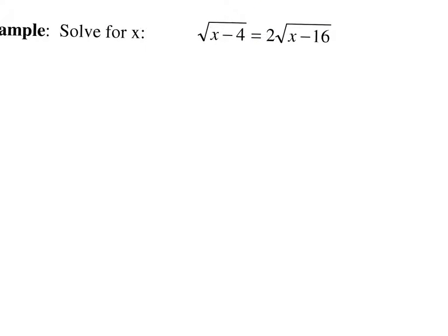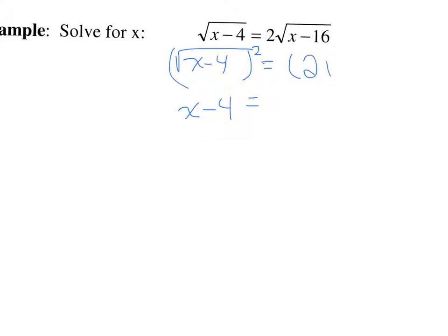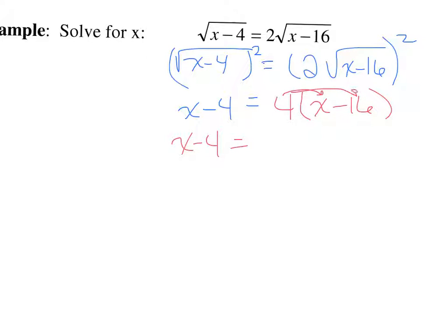This equation has two radicals. The radical on the left — the square root of x minus 4 — is already isolated, but the right side has 2 times the square root of x minus 16. It's not possible to isolate both radicals simultaneously, so since the left one is already isolated, we square both sides. The left gives x minus 4. On the right, squaring distributes: 2 squared is 4, and the square cancels the radical, giving 4 times x minus 16, which distributes to 4x minus 64.